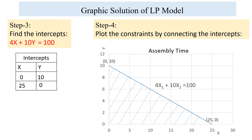The feasible region for the assembly time constraint is the area below the line, because the constraint is less than or equal to. When the sign is less than or equal to, we shade the region below the line. If it were greater than or equal to, we would shade above the line. Since it is less than or equal to, we shade the region below the line.